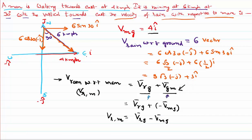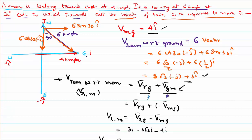We already know both quantities. Velocity of rain with respect to ground is 3i − 3√3 j, and velocity of man with respect to ground is 4i. So the velocity of the rain with respect to man is: (3i − 3√3 j) − 4i = −i − 3√3 j. This is the answer in vector form.